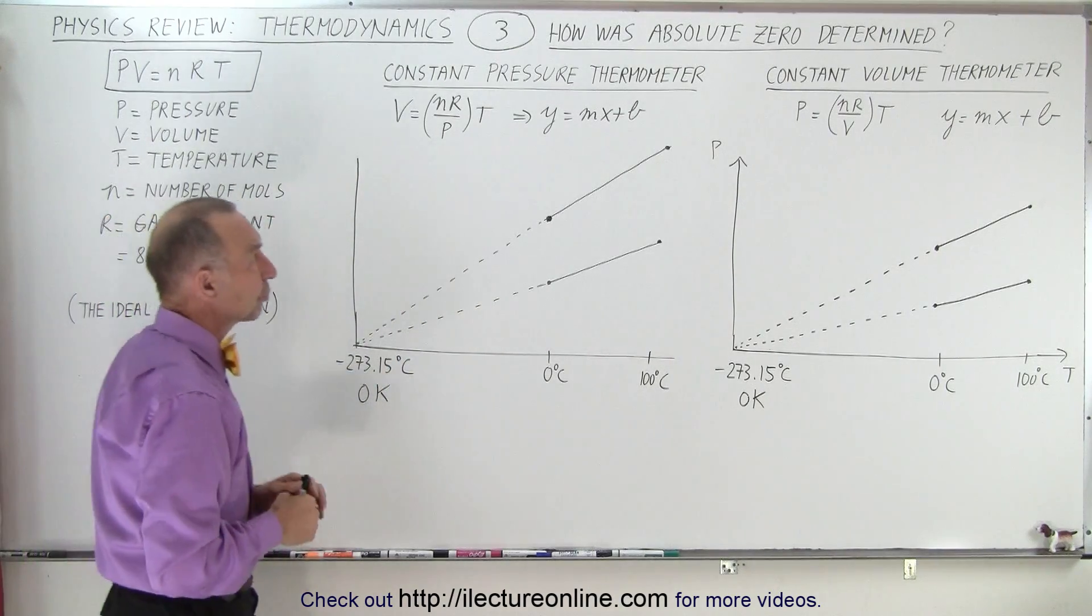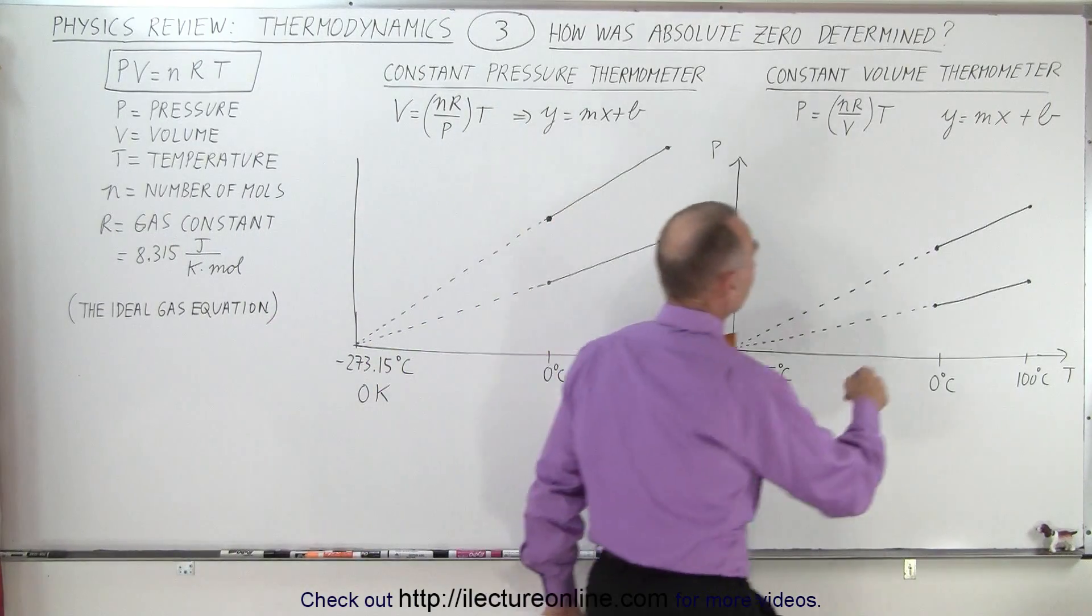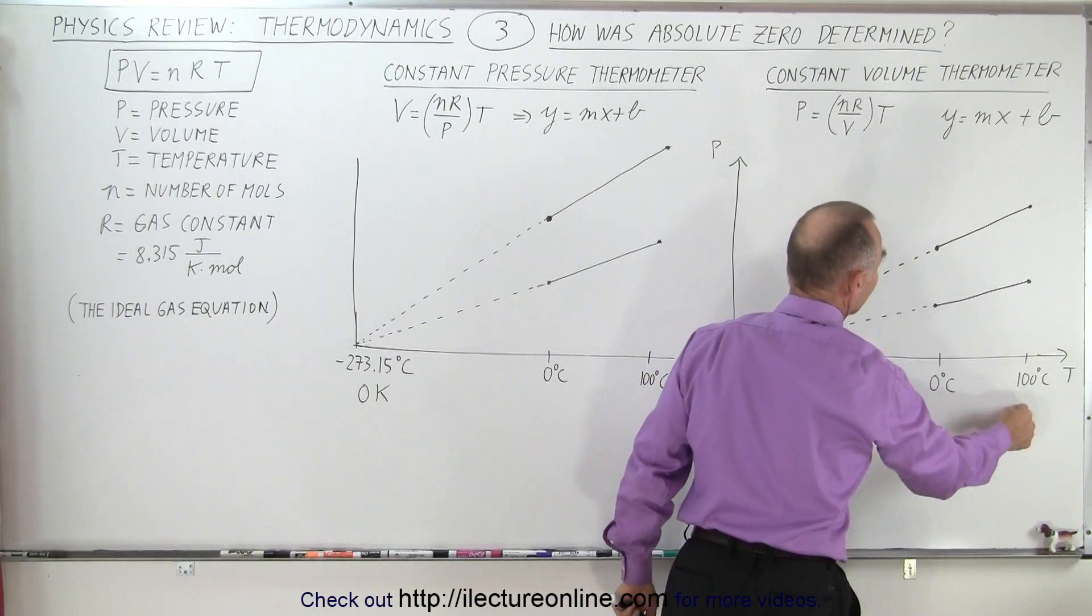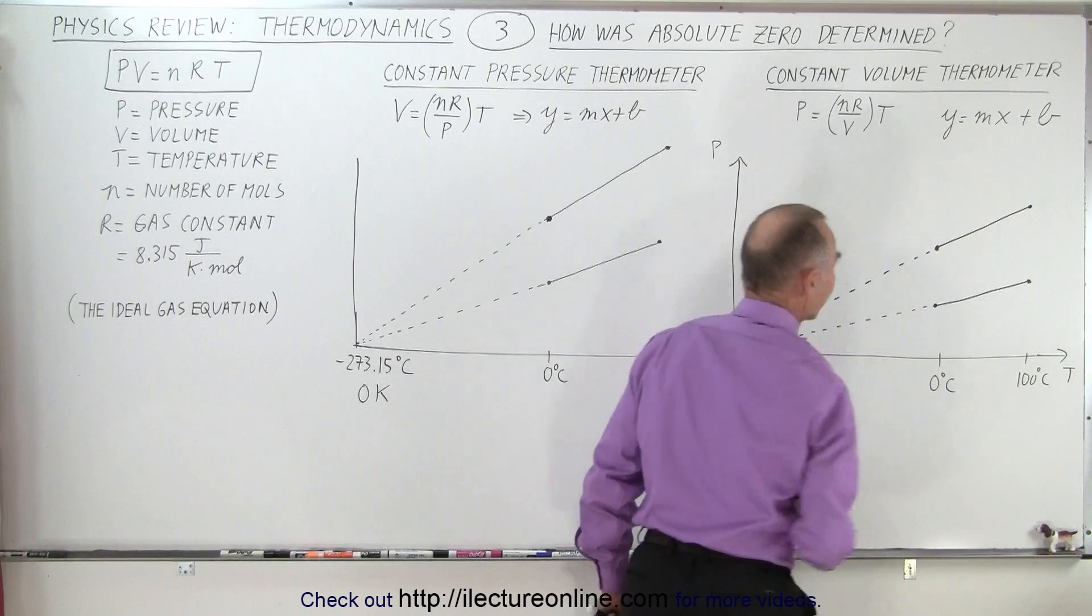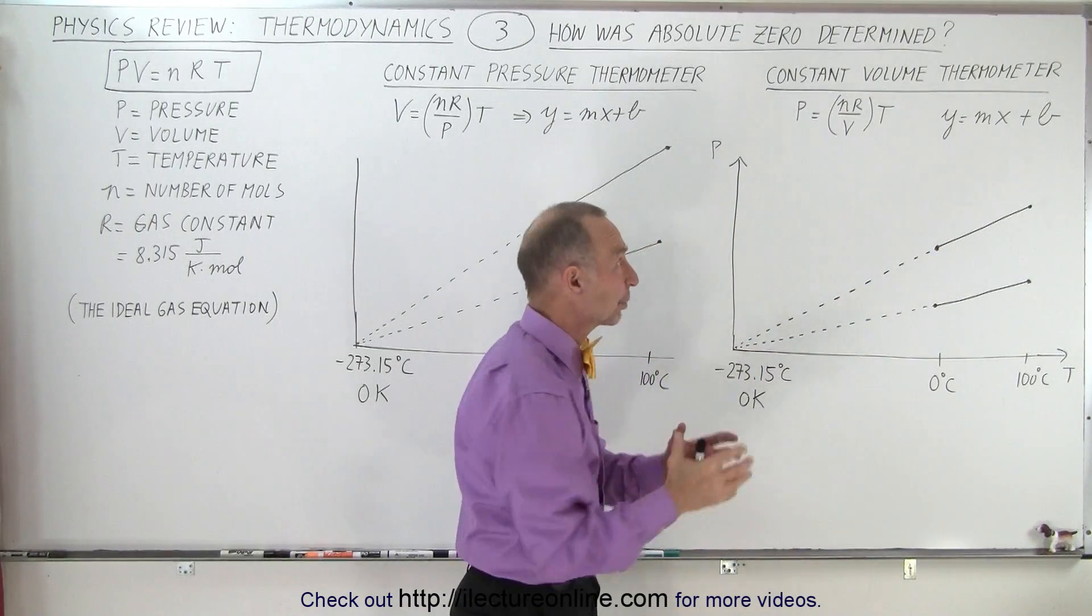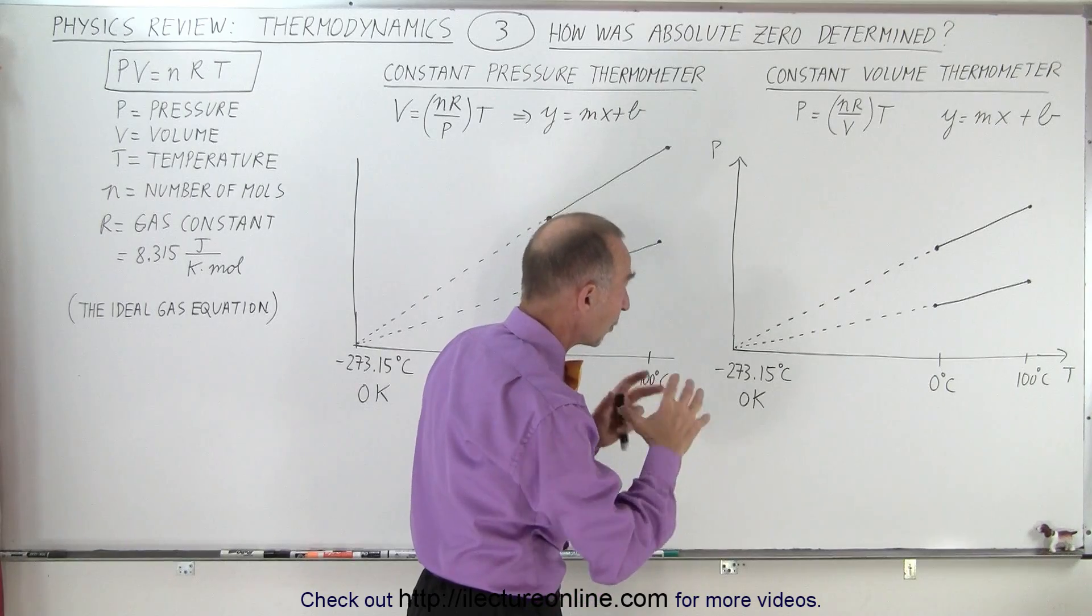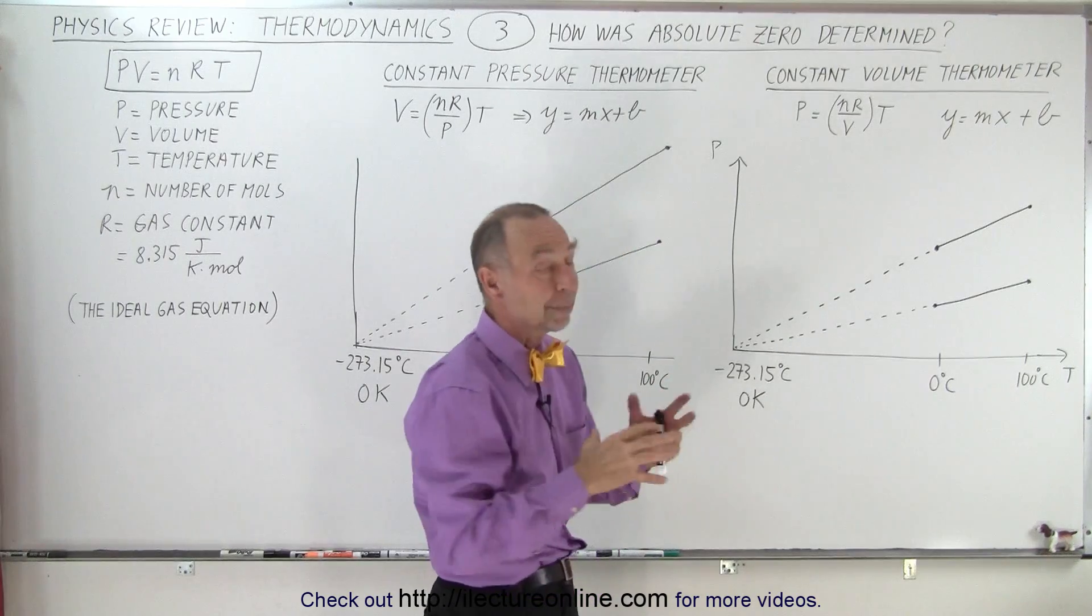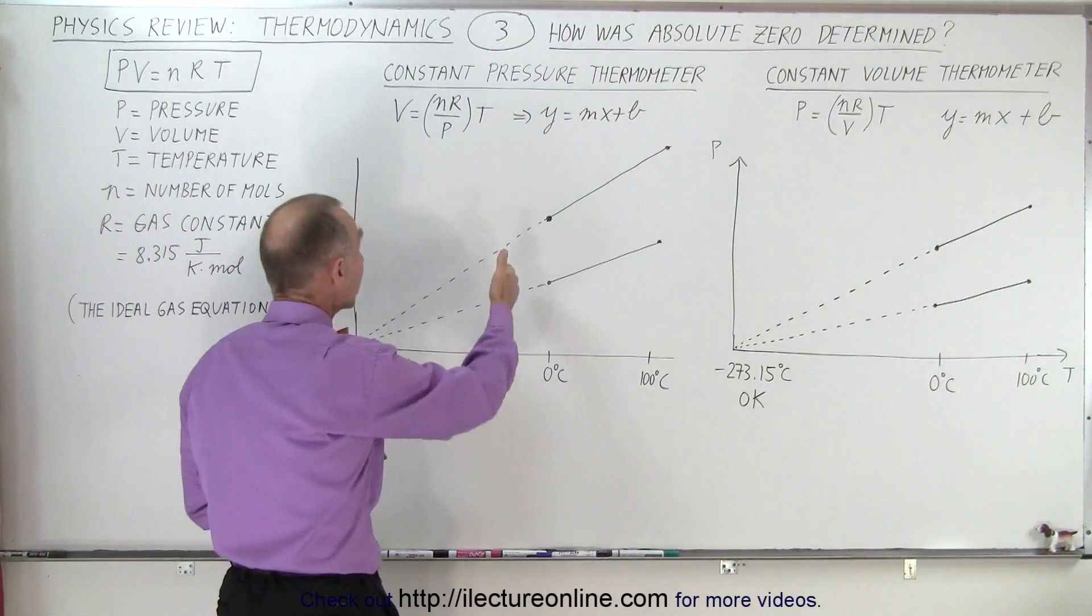And so what we can do is we can use these two thermometers to measure the pressure at 100 degrees Celsius and the pressure at 0 degrees Celsius. The different curves depend upon how much gas you have in that particular container that remains at constant volume and what type of gas you're using.